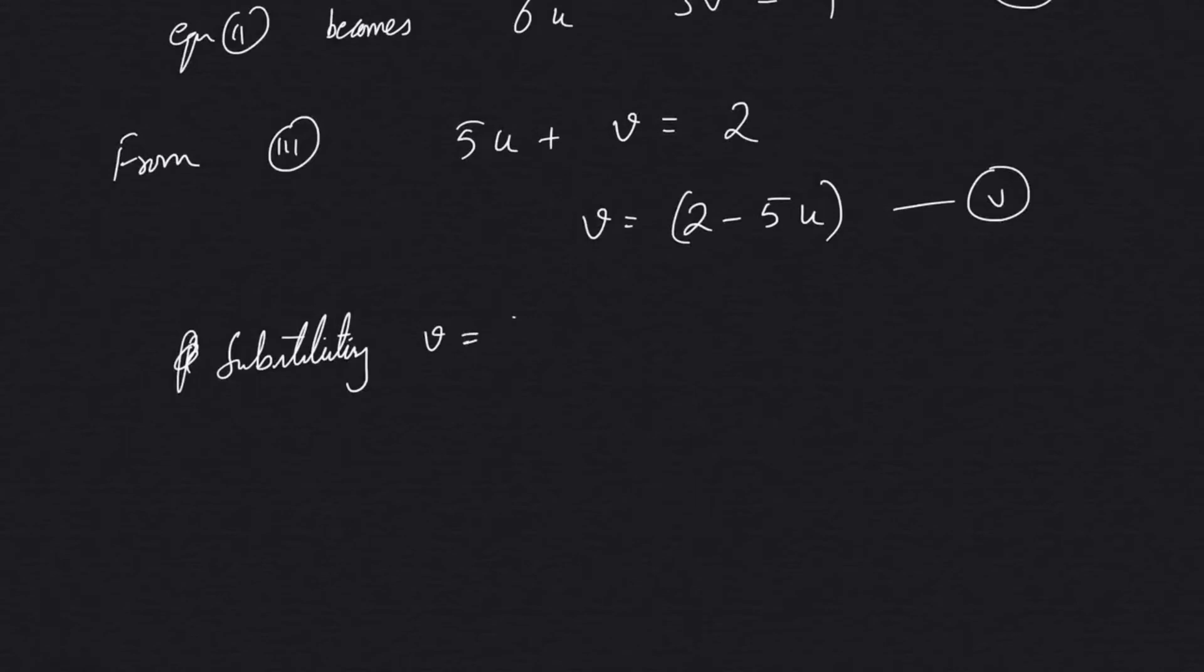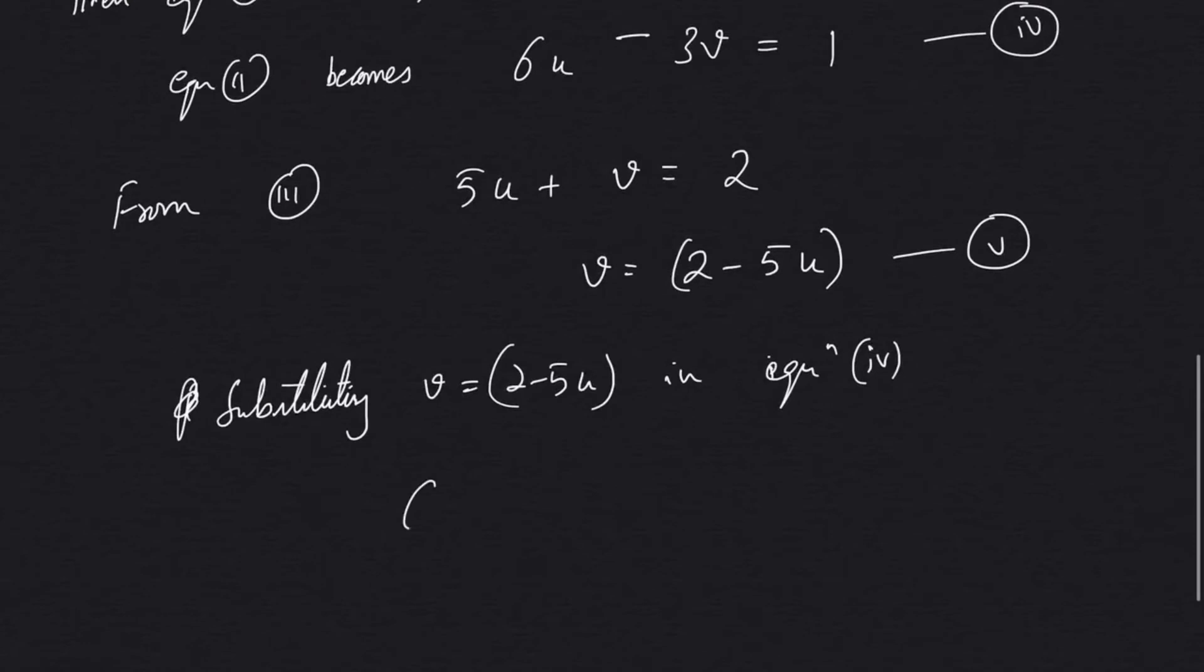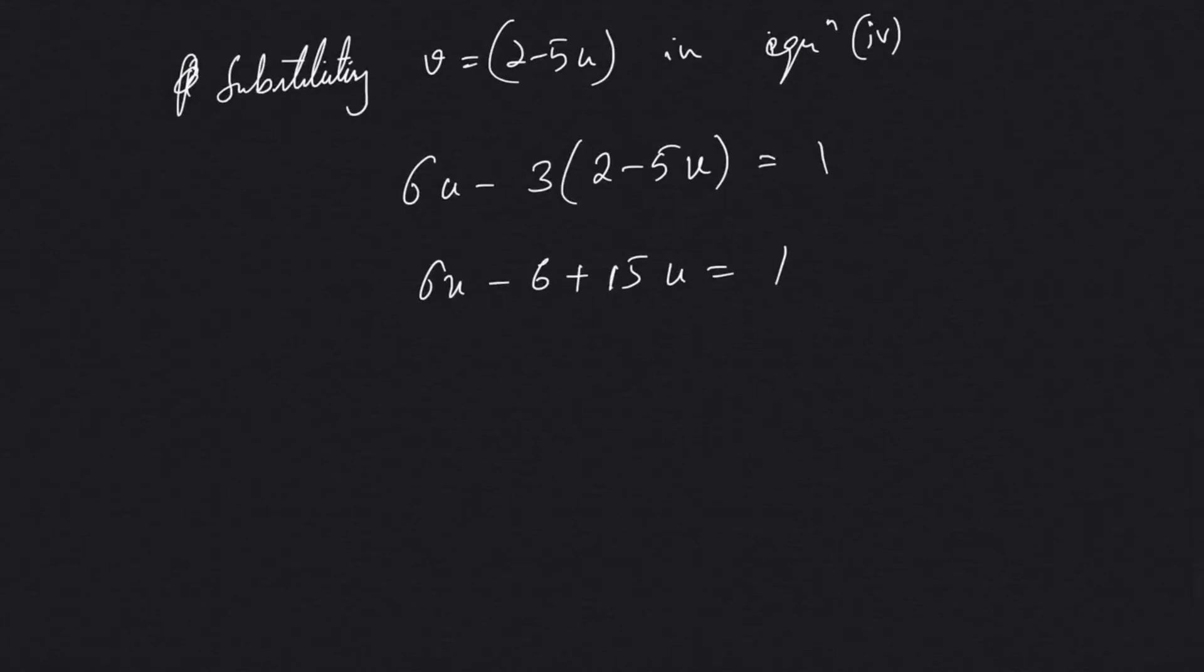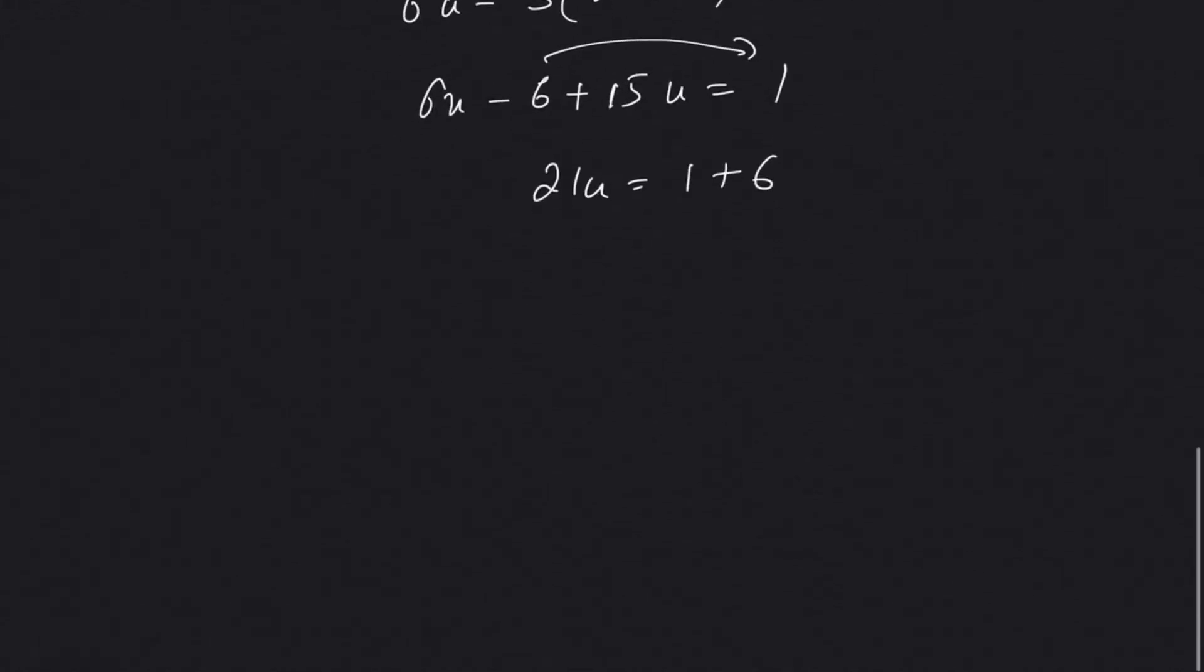Substituting v equal to 2 minus 5u in equation 4: 6u minus 3 into 2 minus 5u equal to 1. 6u minus 6 plus 15u will get to what? 6 plus 15 will be 21u.